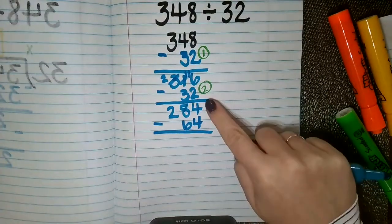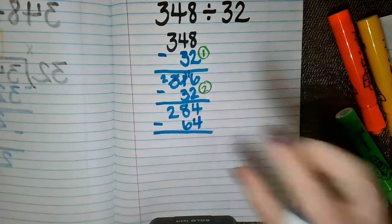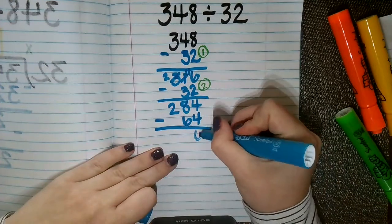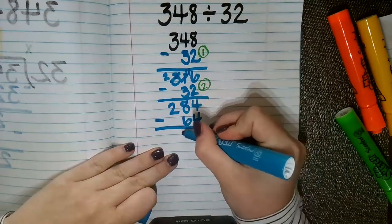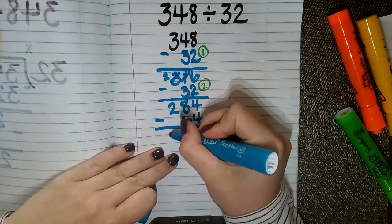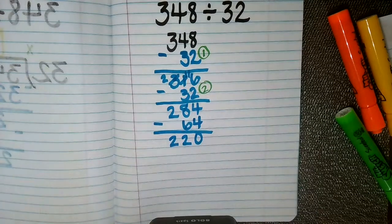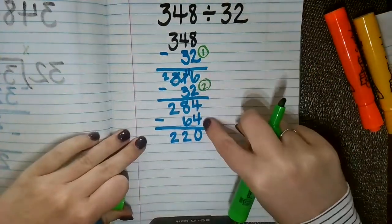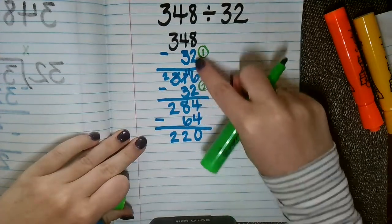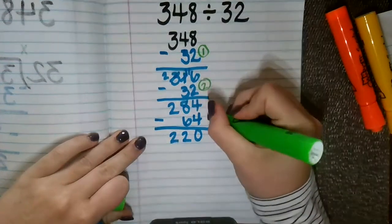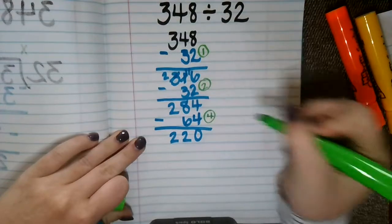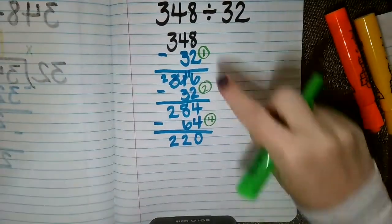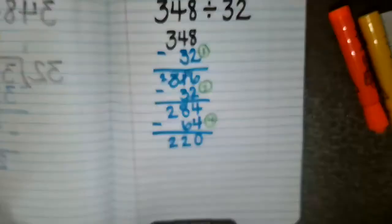So I'm going to take 4 minus 4 which is 0, 8 minus 6 which is 2, and 2 minus nothing is 2. So now since 64 is the same as two groups of 32, I have now taken four groups of my divisor away from my dividend of 348.